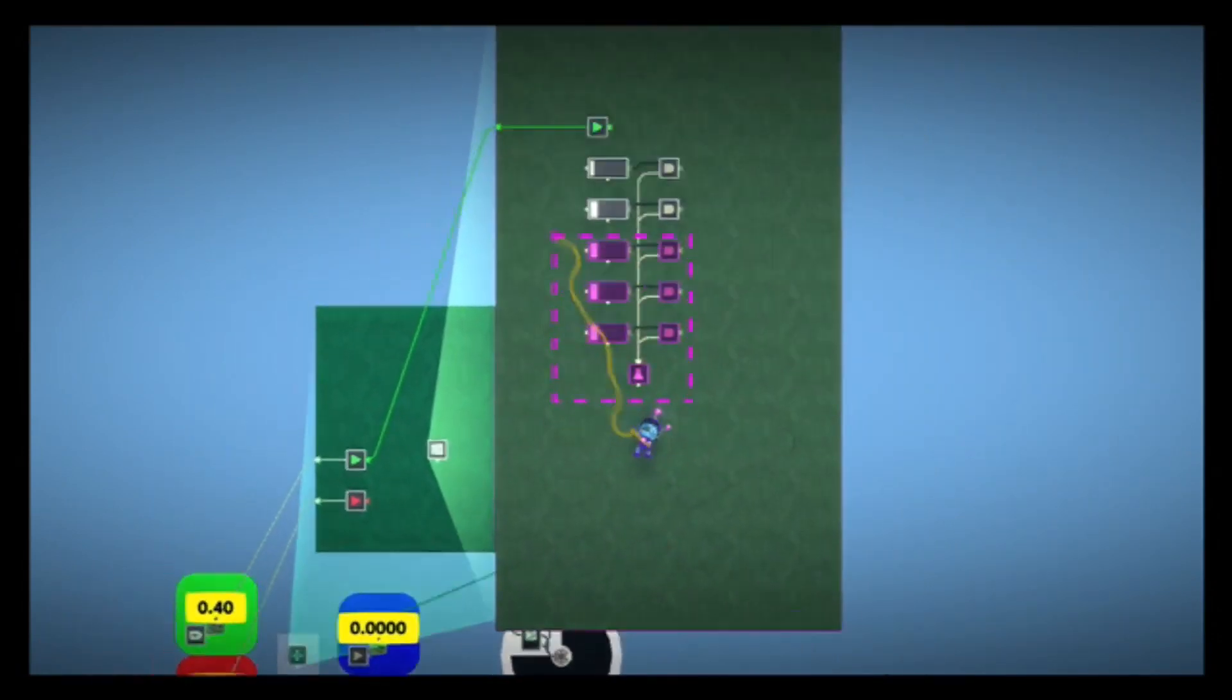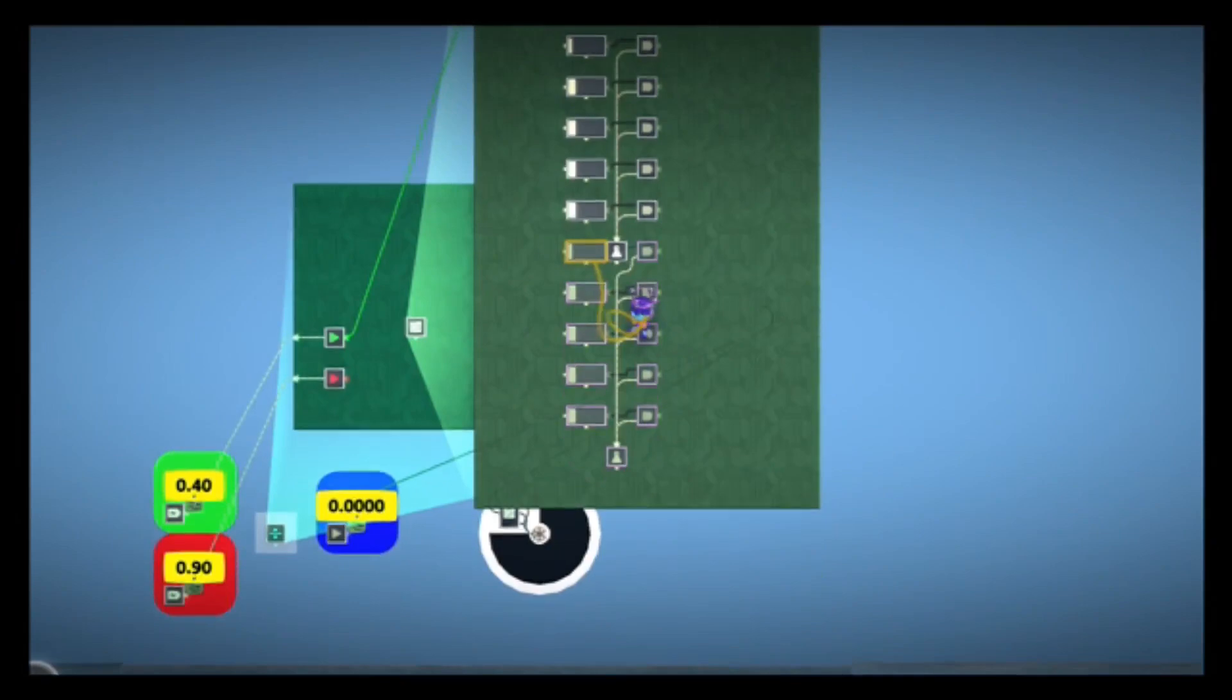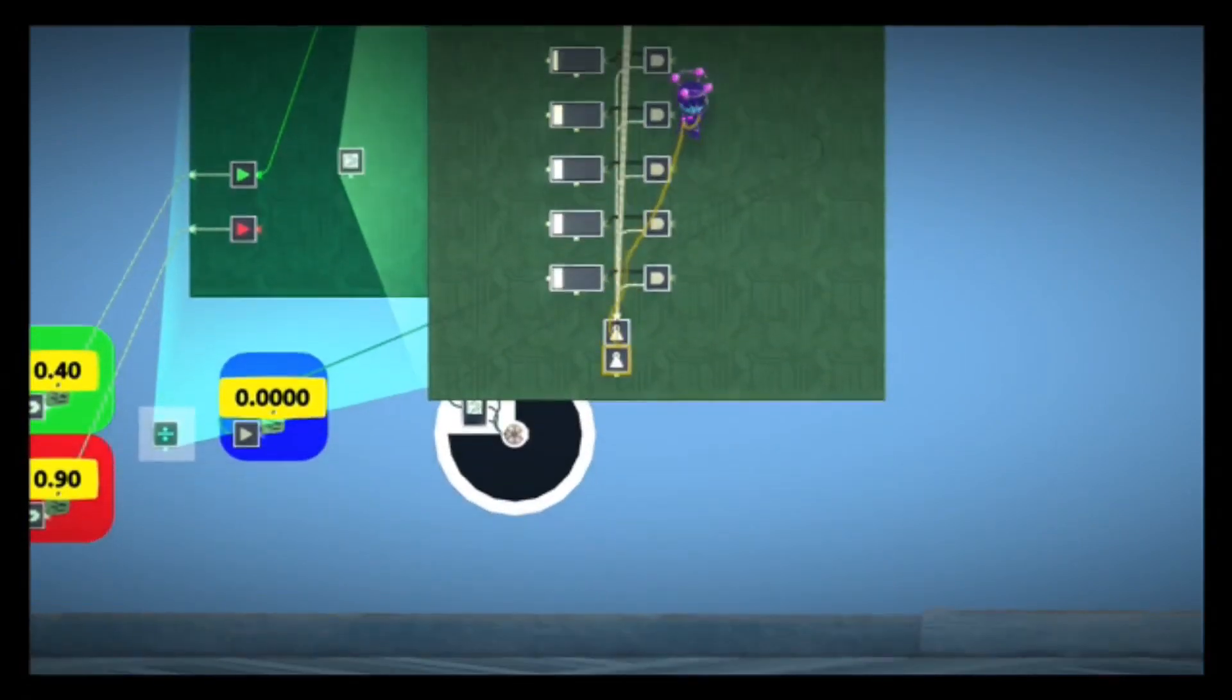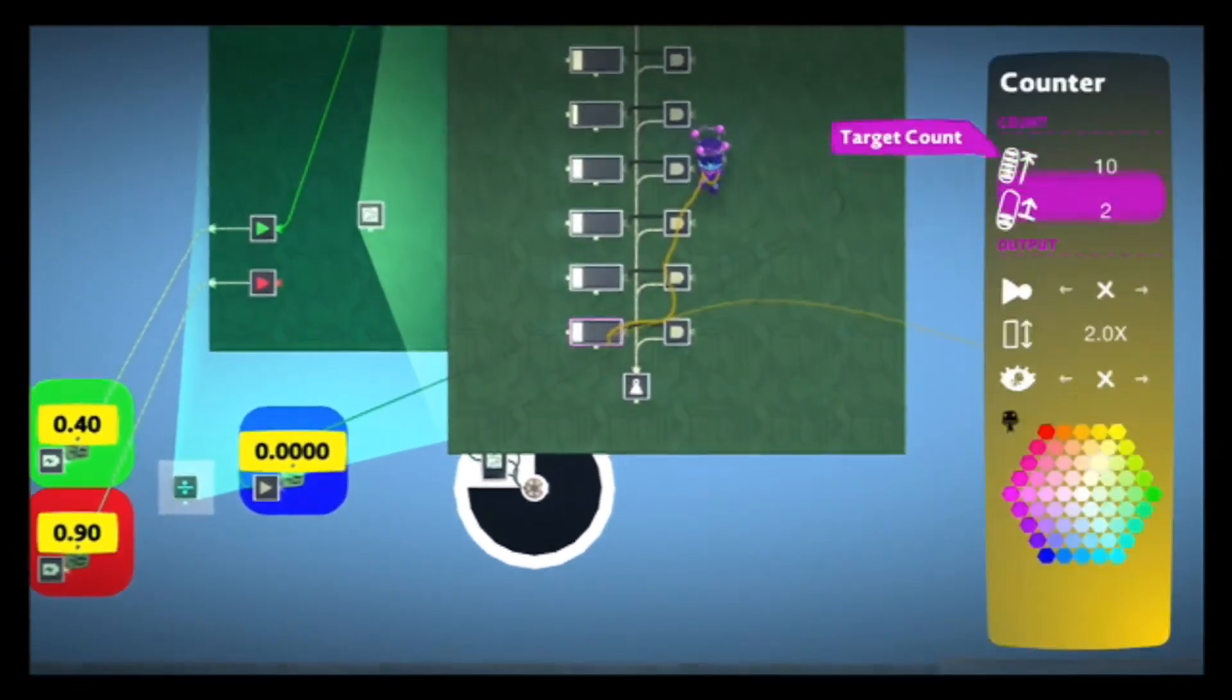Now I'm going to copy my group of 5, and now I can get my group of 10. Now I'm going to merge my two NOT gates together, and this is going to connect all these inputs for me.